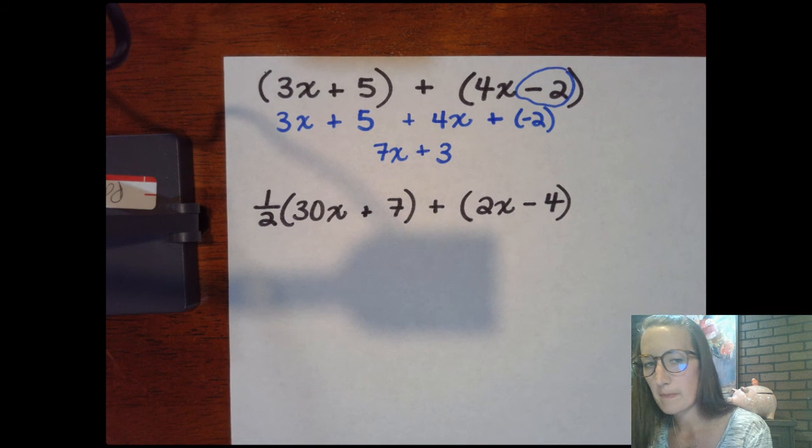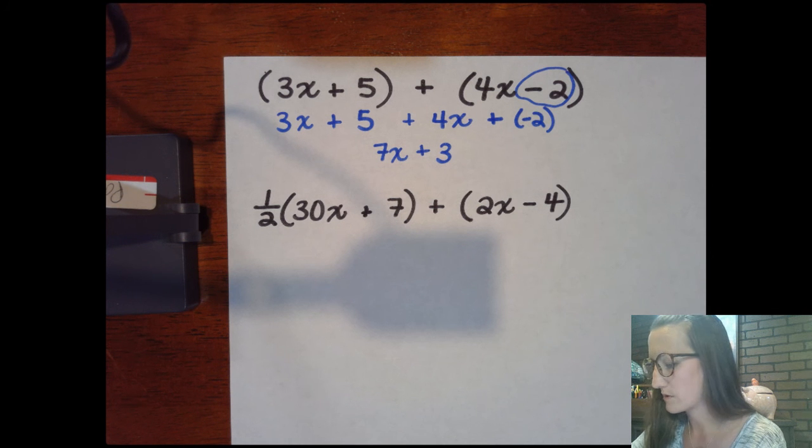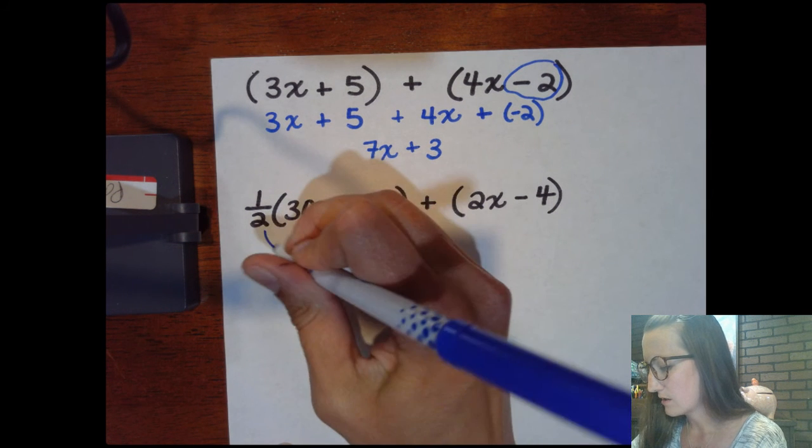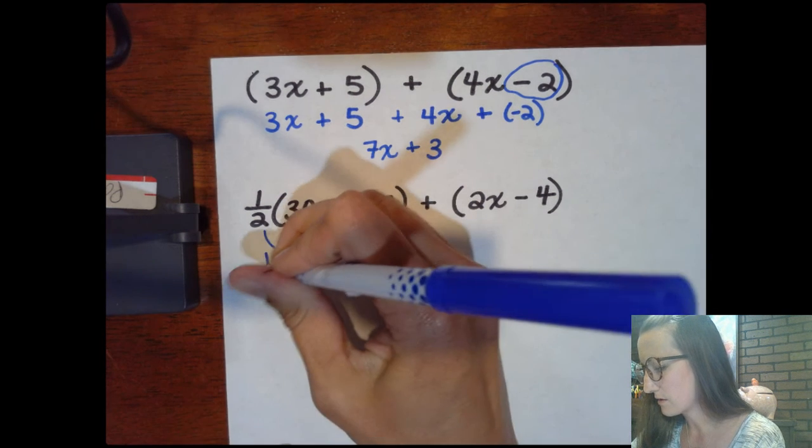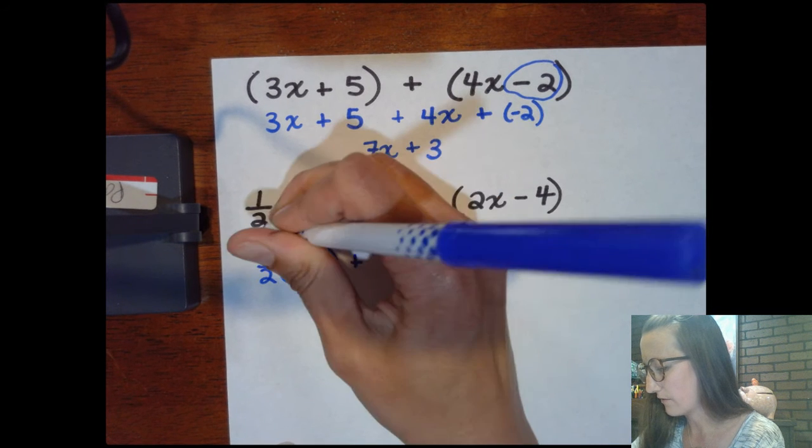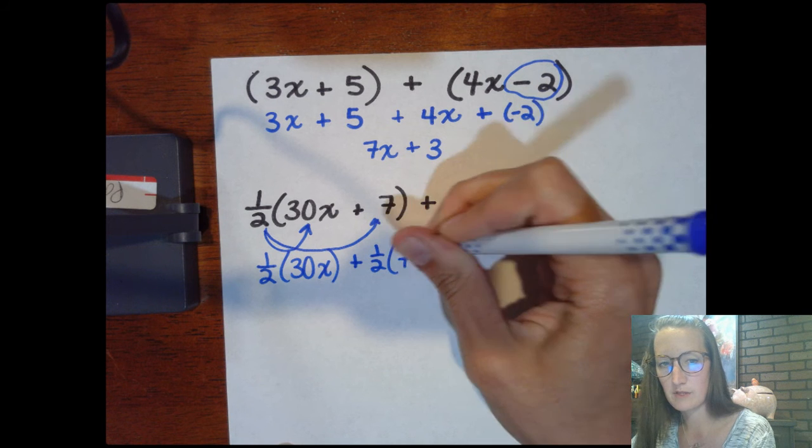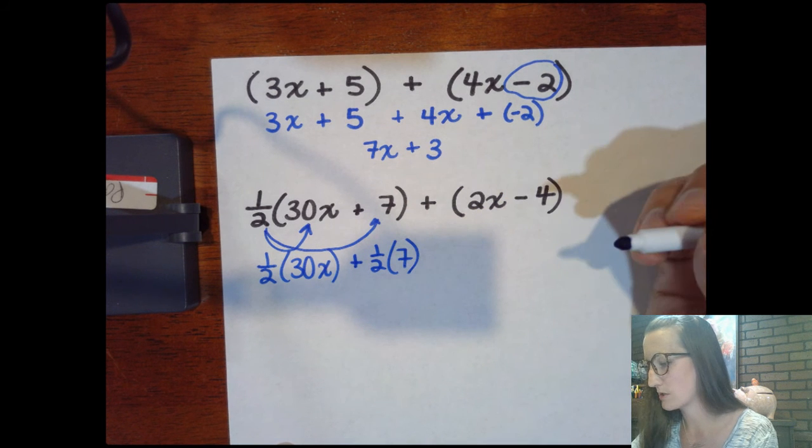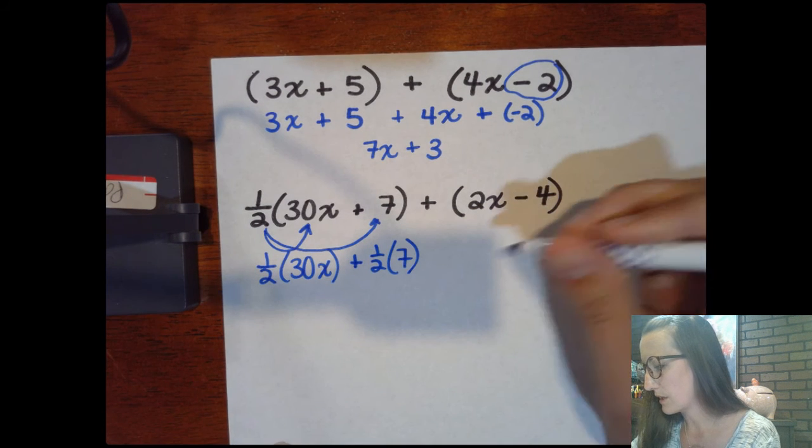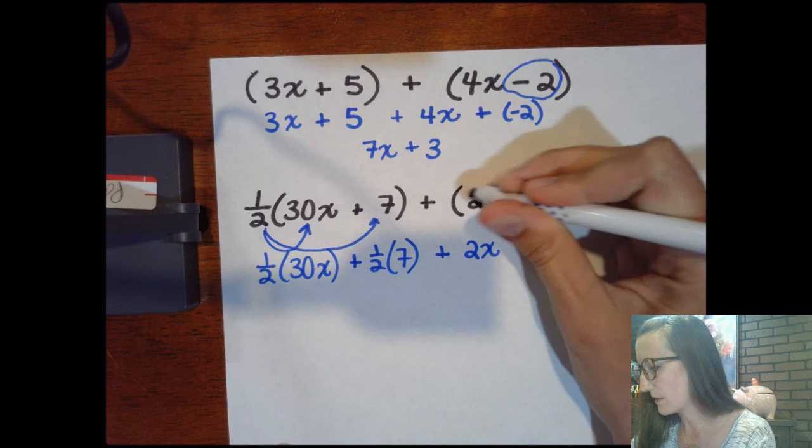We are going to build on it. For example, we might use distributive property before we can combine like terms. So this would give us one half times 30x plus one half of 7. I can drop the parentheses other than what's showing the distributive property, plus 2x plus a minus 4.